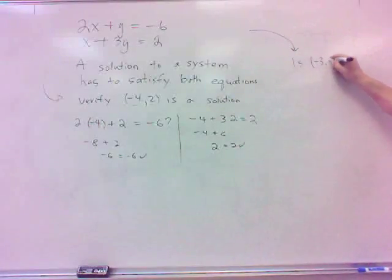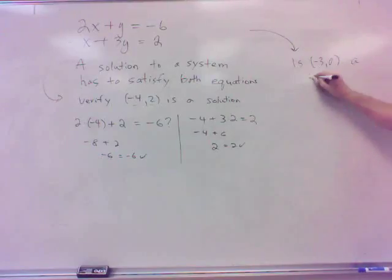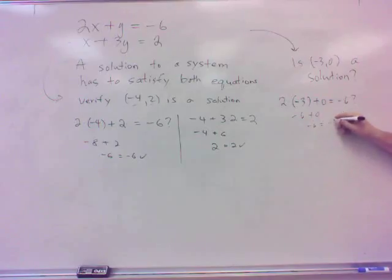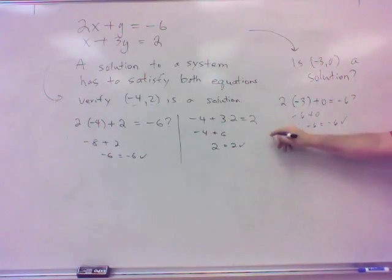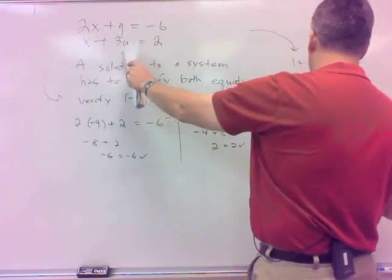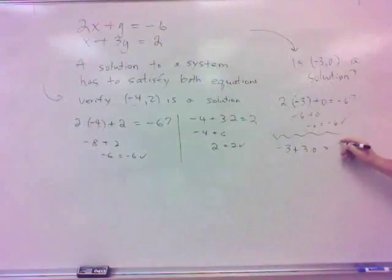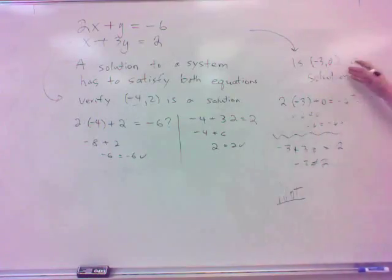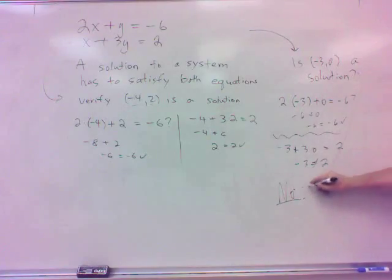Let me ask you this, then. Same system. Is negative 3, 0 a solution? Is that a solution? First one it is. 2, if I plug it into the first one, 2 times negative 3 plus 0 equals negative 6. You're saying that's right? Yeah, negative 6 plus 0, sure enough. But is that enough to say it's a solution, though? No. It's got to work in both. So does it work in the second one? Negative 3 plus 3 times 0. Plugging in those for X and Y. Does that equal 2? No. It's got to work in both. So is negative 3 a solution? No. No, it's not.